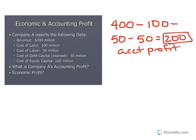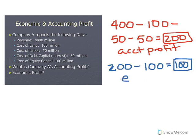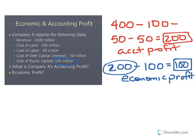Next, calculate economic profit by taking that accounting profit of $200 million and subtracting the equity capital — what shareholders were expecting to make. The equity capital was valued at $100 million. $200 million minus $100 million leaves $100 million, so we have positive economic profit. The firm made their shareholders twice as much as they were expecting.